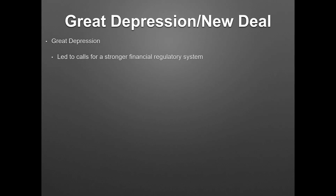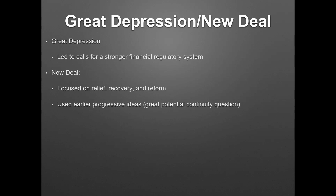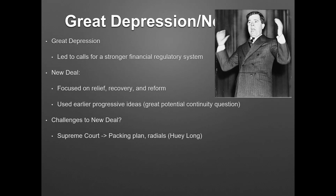The Great Depression is going to lead to a call for a stronger financial regulatory system. Herbert Hoover, who was president and a Republican, believed in laissez-faire, so he did not want to do that. In 1933, Franklin Delano Roosevelt will be elected president and he's going to implement the New Deal. Much of the New Deal is going to be pushed during his first hundred days, where he's going to have Congress pass a plethora of legislation. A lot of the New Deal will focus on relief, recovery, or reform, using earlier progressive ideas. There will be challenges to the New Deal — the Supreme Court is going to rule against some of the New Deal legislation like the AAA, the Agricultural Adjustment Act. In return, FDR wants to pack the Supreme Court and appoint new justices, and this is going to turn some Democrats against him because they think he's gone too far.